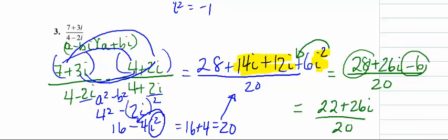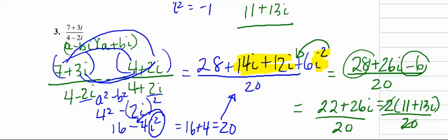And then I notice that on top I have a common factor, so the highest number that goes into 22 and 26 is 2, so we can take the 2 out, and we get 11 plus 13i over 20. That allows us to reduce, so I'm going to write this back up here: we get 11 plus 13i over, 2 goes into 20, 10 times.